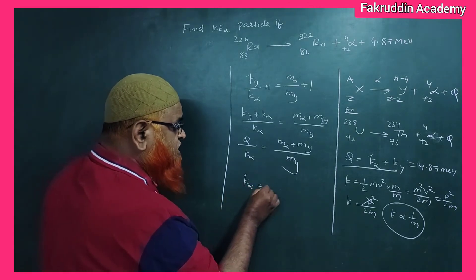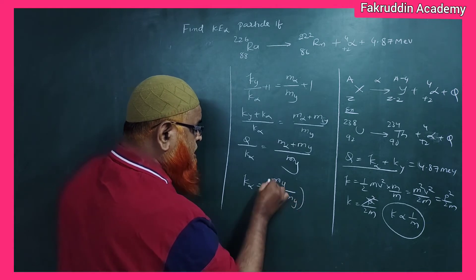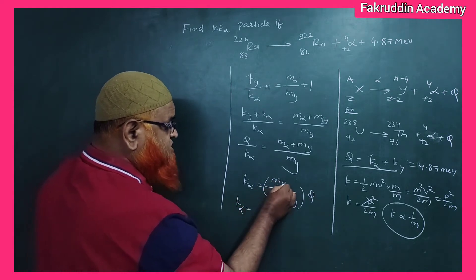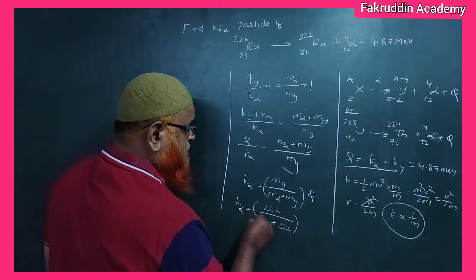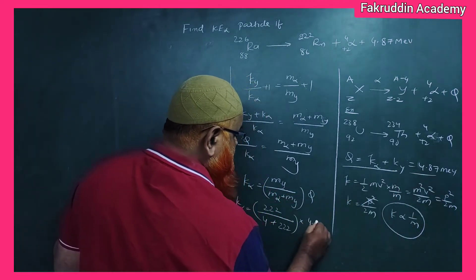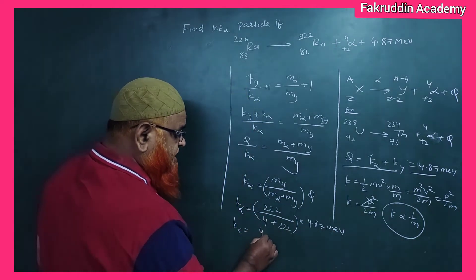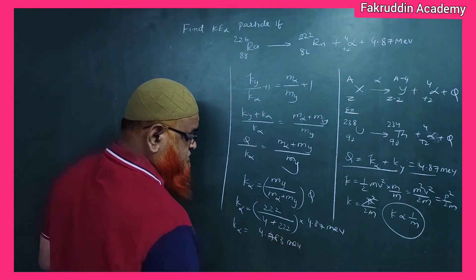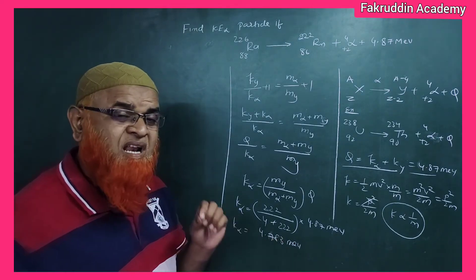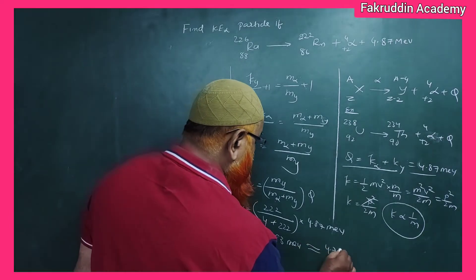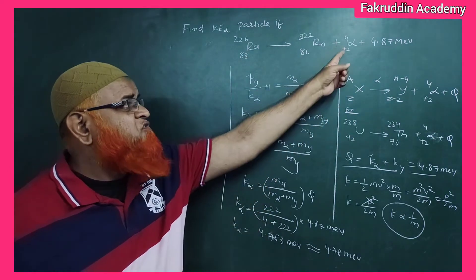We can now find the kinetic energy of the alpha particle: KE(alpha) = [mass(daughter) / (mass(alpha) + mass(daughter))] × Q. The mass of the alpha particle is 4, the mass of the daughter nucleus is 232, and Q = 4.87 MeV. Calculating this gives 4.783 million electron volts, approximately 4.78 MeV.